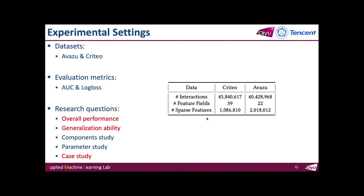I will now introduce the experimental settings. We mainly conduct experiments on two benchmark datasets: Amazon and Criteo. The evaluation metrics are AUC score and log loss. We conduct five experiments in total, and I will introduce three experiments highlighted in red.